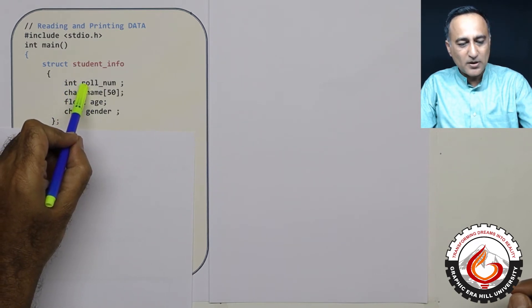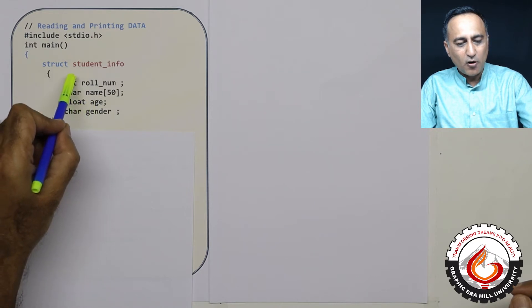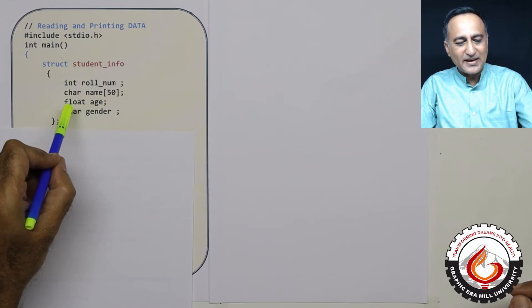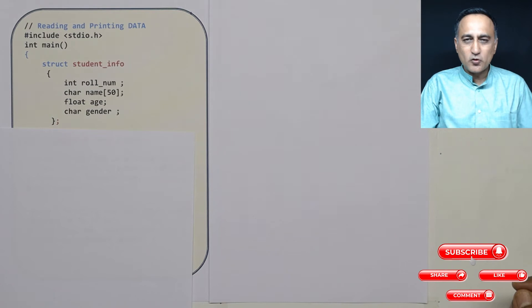First is roll number, name, age and gender of different data types: int, char and float. Don't worry why age is float, just to show you different combinations, I have used age as float.